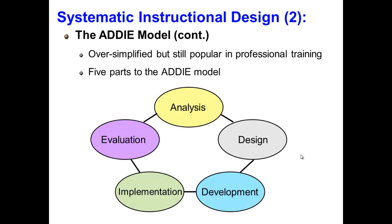ADDIE stands for Analysis, Design, Development, Implementation, and Evaluation, and although it is oversimplified, it still is popular in professional training today. Analysis refers to the process of defining desired outcomes. Design refers to the process of determining how desired outcomes are to be accomplished based on supporting systems needed, required resources, timetable, and budget.